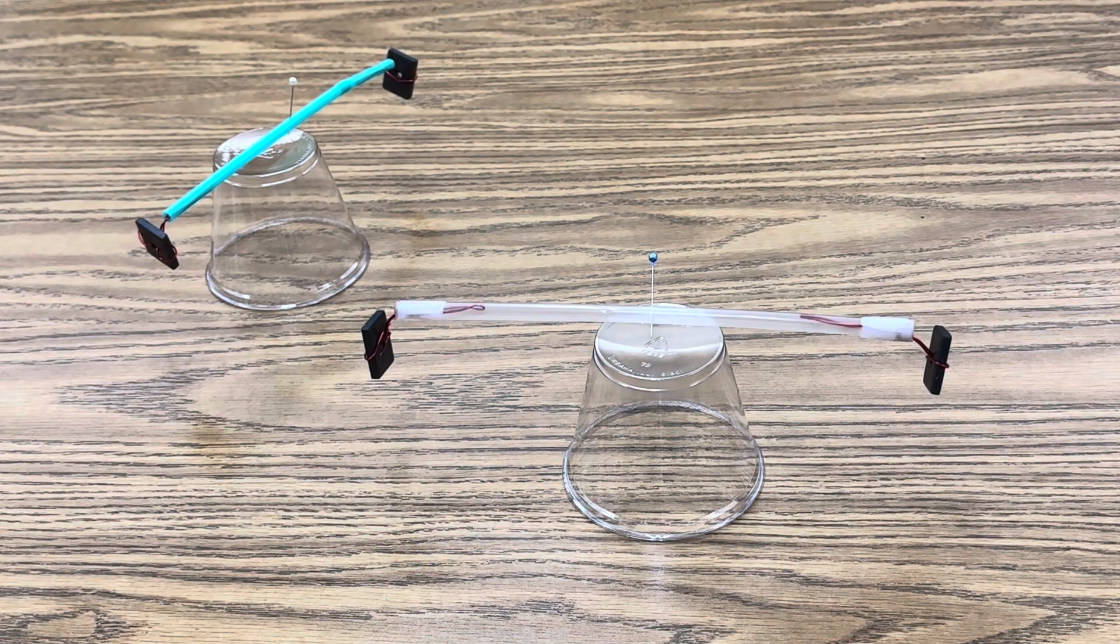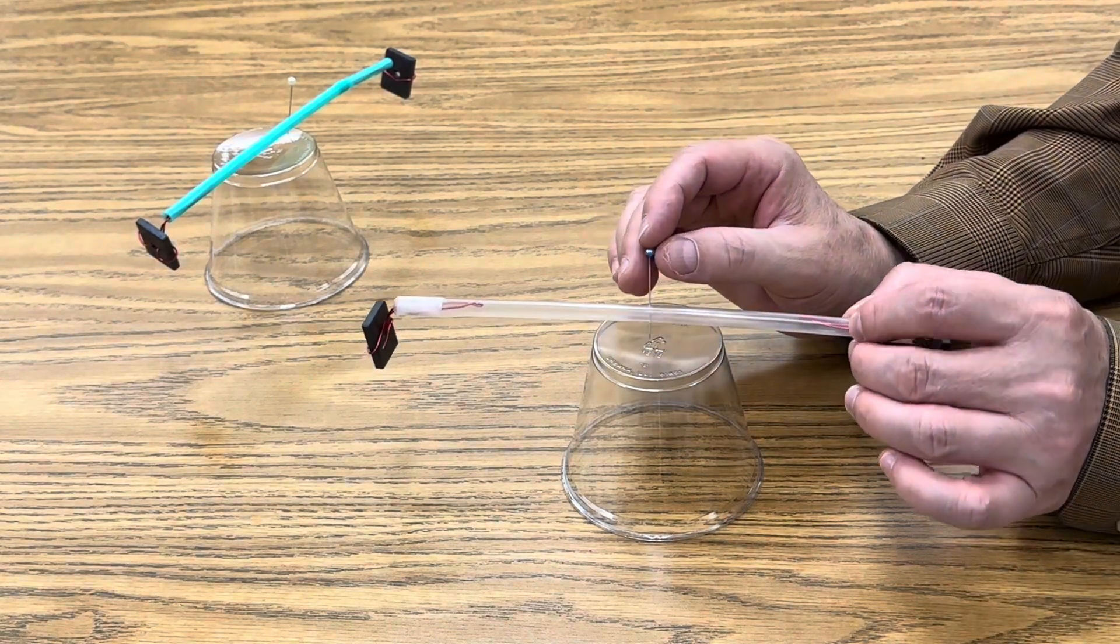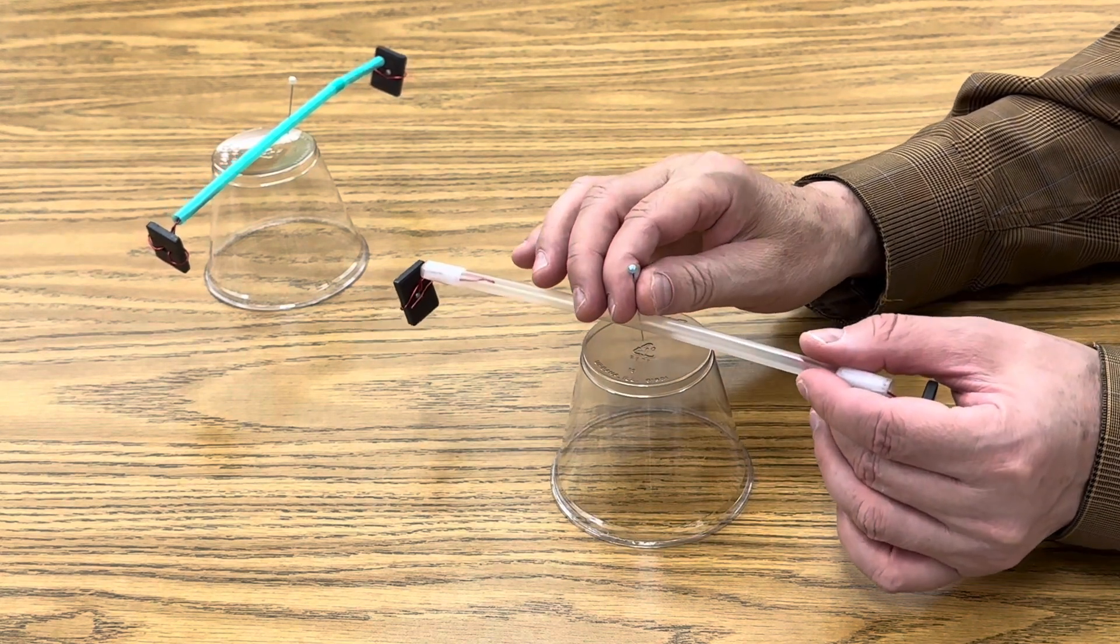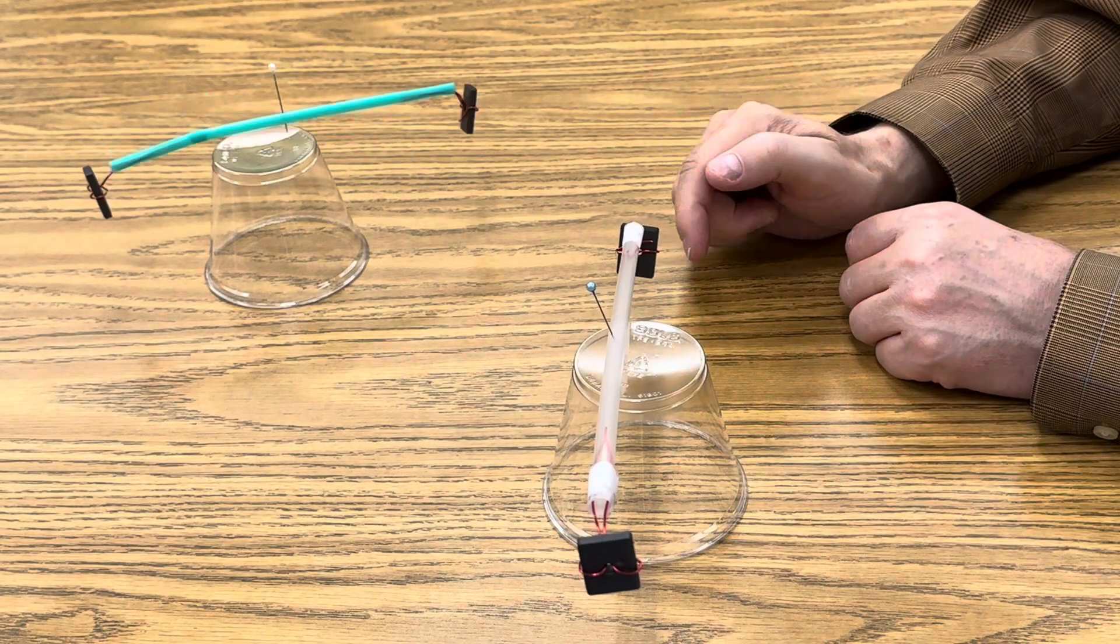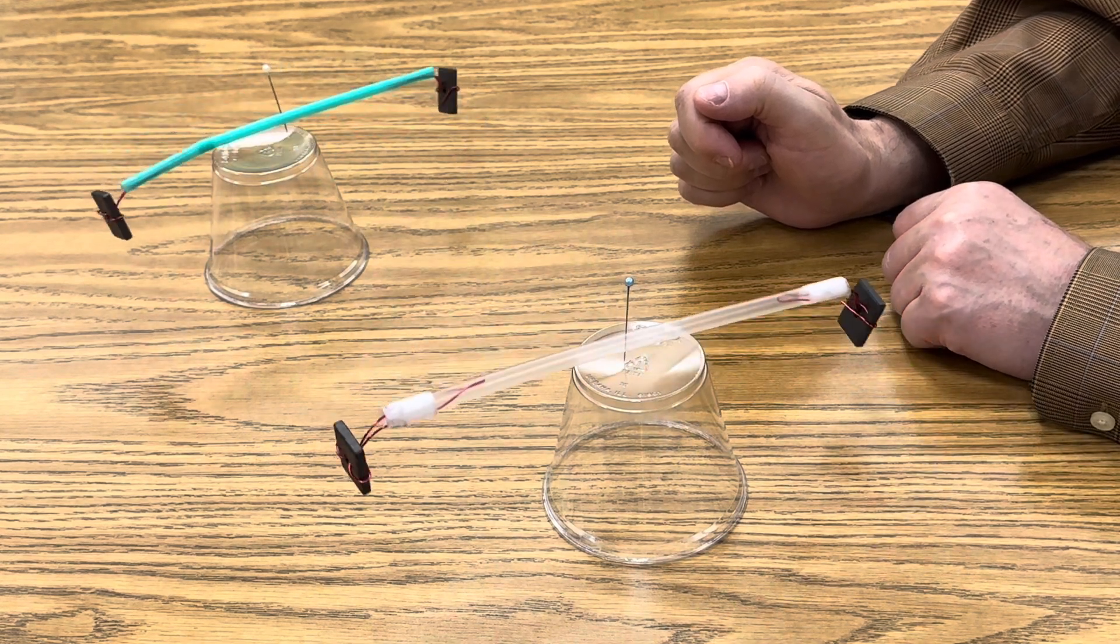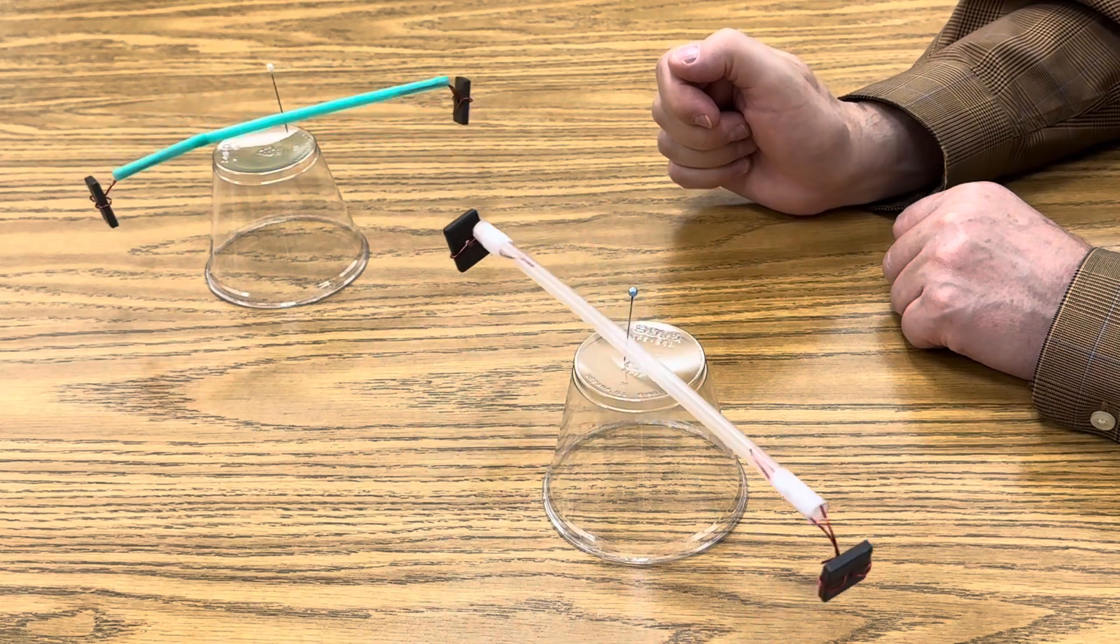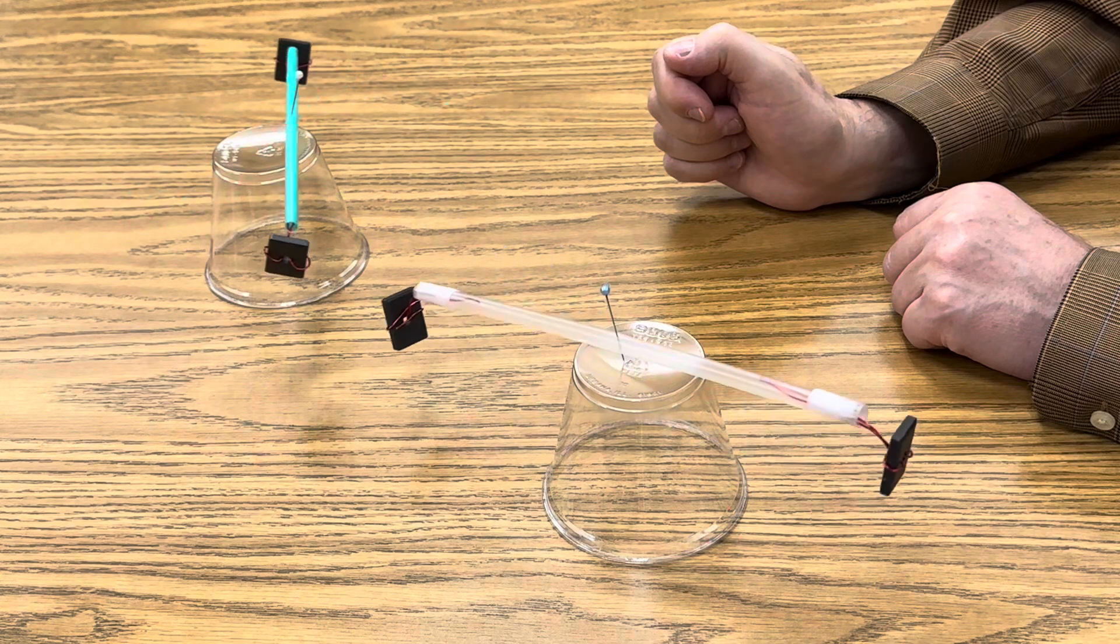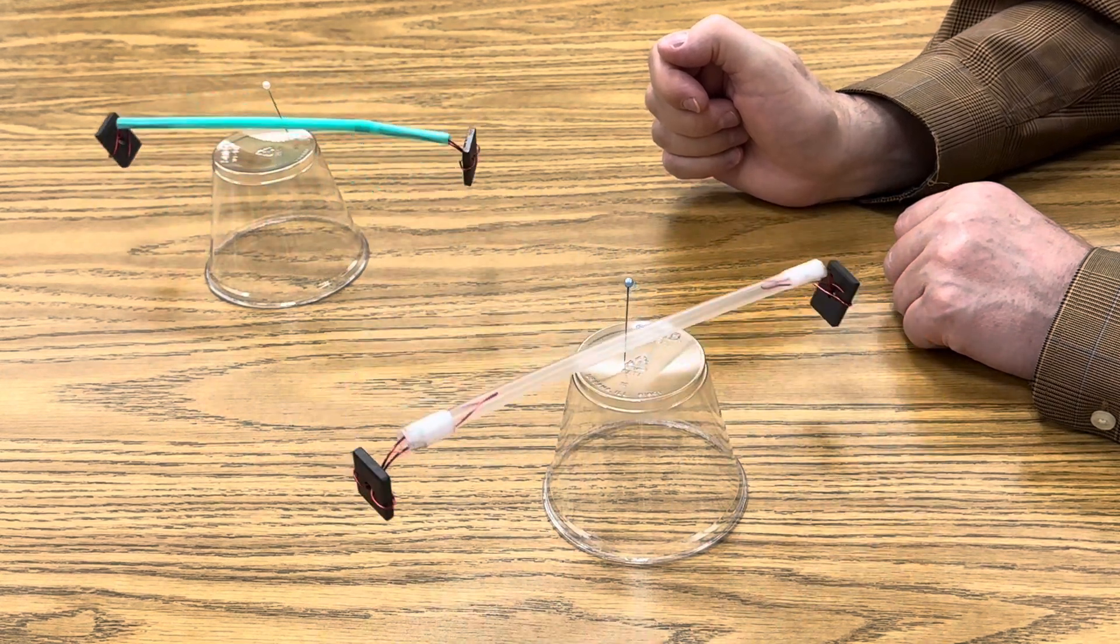Now if you have two compasses side by side and you're careful you can demonstrate how one compass can repel the other given that they're not too far apart from each other. Here you can see if your compasses are the right distance from each other and they're in time with each other's rotation one will actually repel the other.